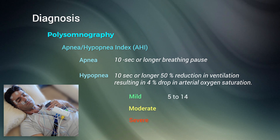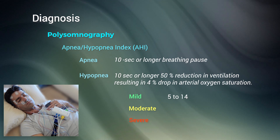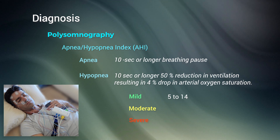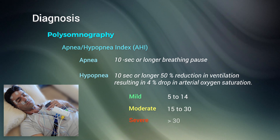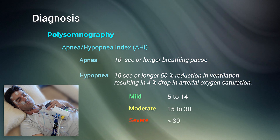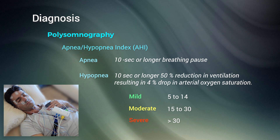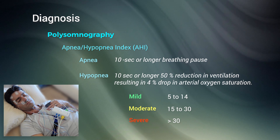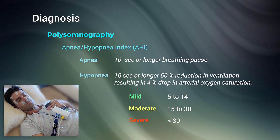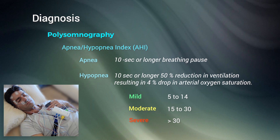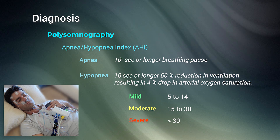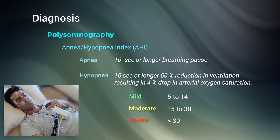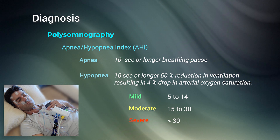An index of 5 to 14 indicates mild, 15 to 30 moderate, and more than 30 is severe sleep apnea. It is noted that most cases of central apnea also have an obstructive component, and pure central sleep apnea is rare.